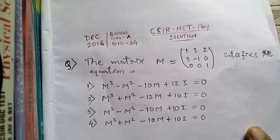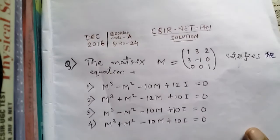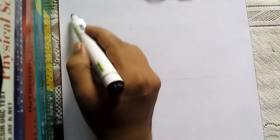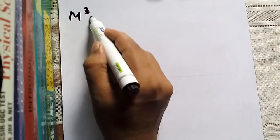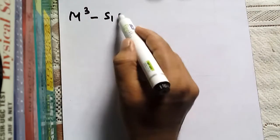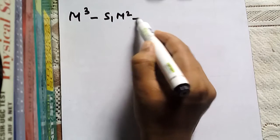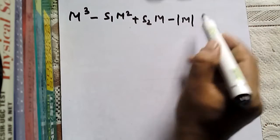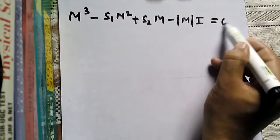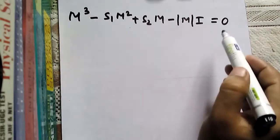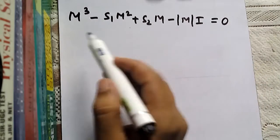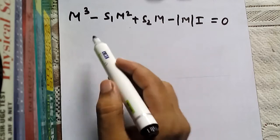First of all, let us write down the standard equation satisfied by a square matrix. That equation is: M³ minus S1 times M² plus S2 times M minus det(M) times I equals 0. This is the standard equation — it can also be called the matrix polynomial equation.